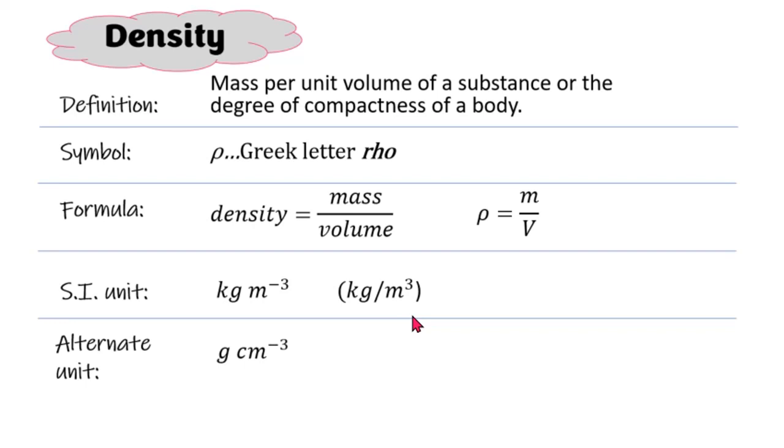So that's the alternate unit, and likewise it can be represented in this manner. Please note where there is a division bar, you do not have your negative sign, but where there is no division bar, then your negative sign is used. Now finally, how do these two quantities relate? 1000 kg/m³ is equal to 1 g/cm³.